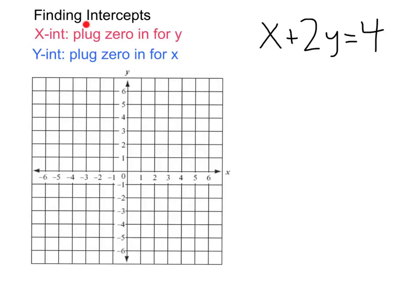Now to find intercepts with an equation, we can do something pretty fancy. Notice on this graph here on the x-axis, every point has a y-value of zero.